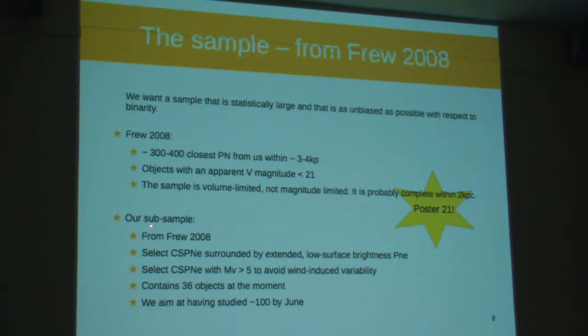So our subsample, the sample we observed, is drawn from Frew 2008. So we selected central stars with extended, old, low surface brightness nebulae to avoid contamination when doing the photometry, and also we selected central stars with absolute magnitude 3 to 5 in V to avoid intrinsic variability and very massive stars. So the current sample contains 36 objects, and we aim by having studied 100 by June, which is the length of my PhD.